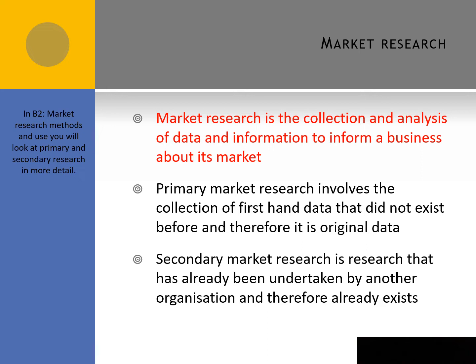An example of primary research may be questionnaires, surveys, or focus groups. On the other hand, secondary market research is research that has already been undertaken by another organisation and therefore already exists. This can be found online, in library books, newspaper articles, and research papers.